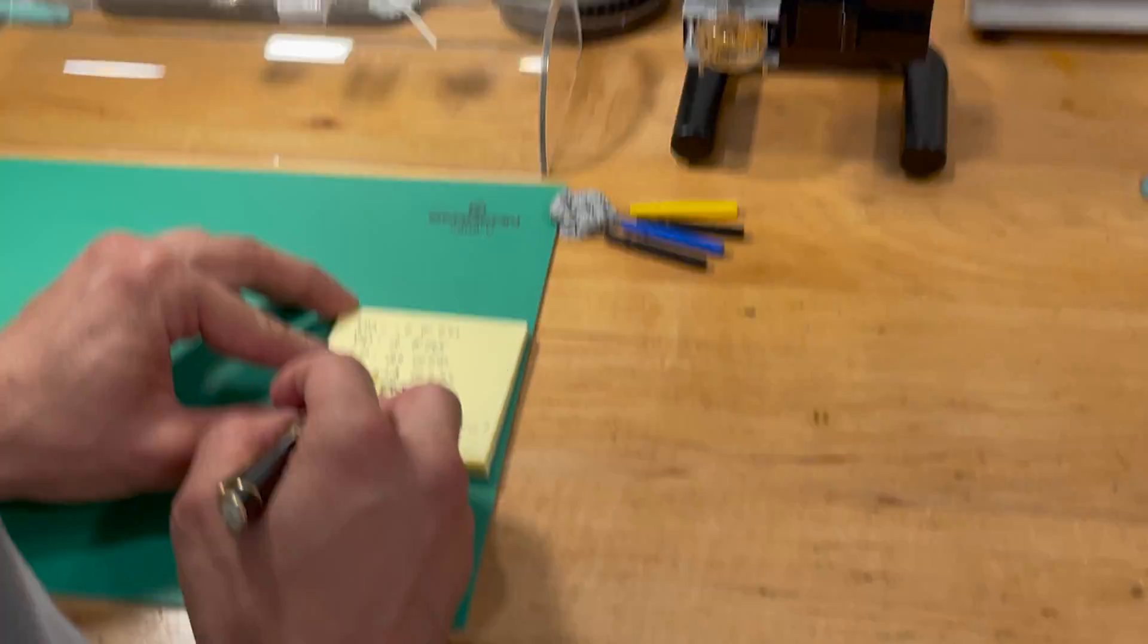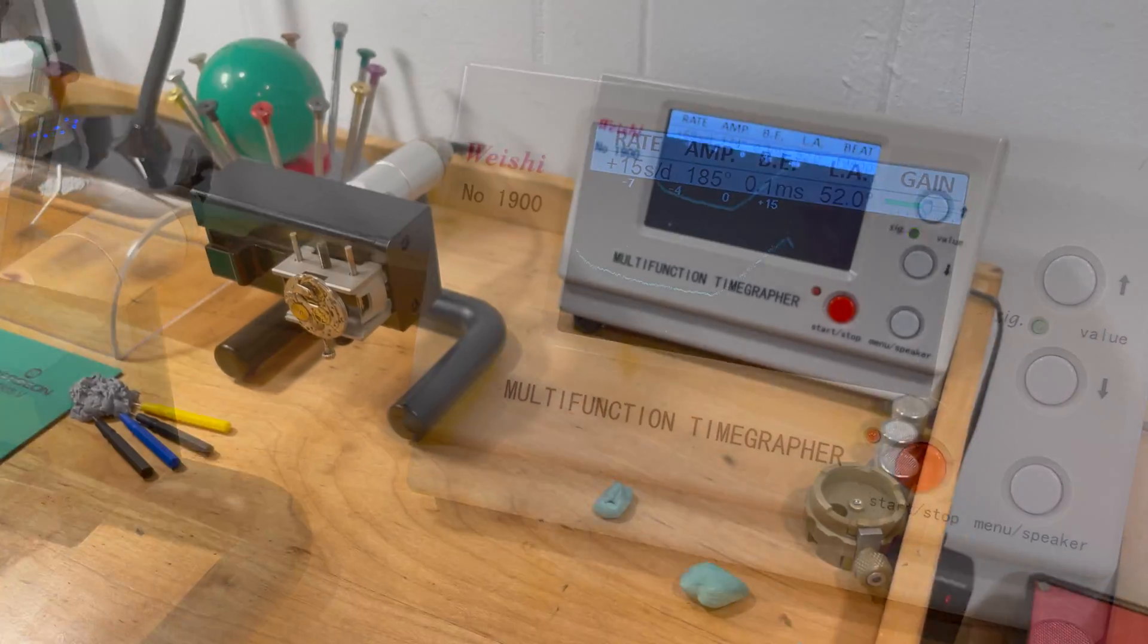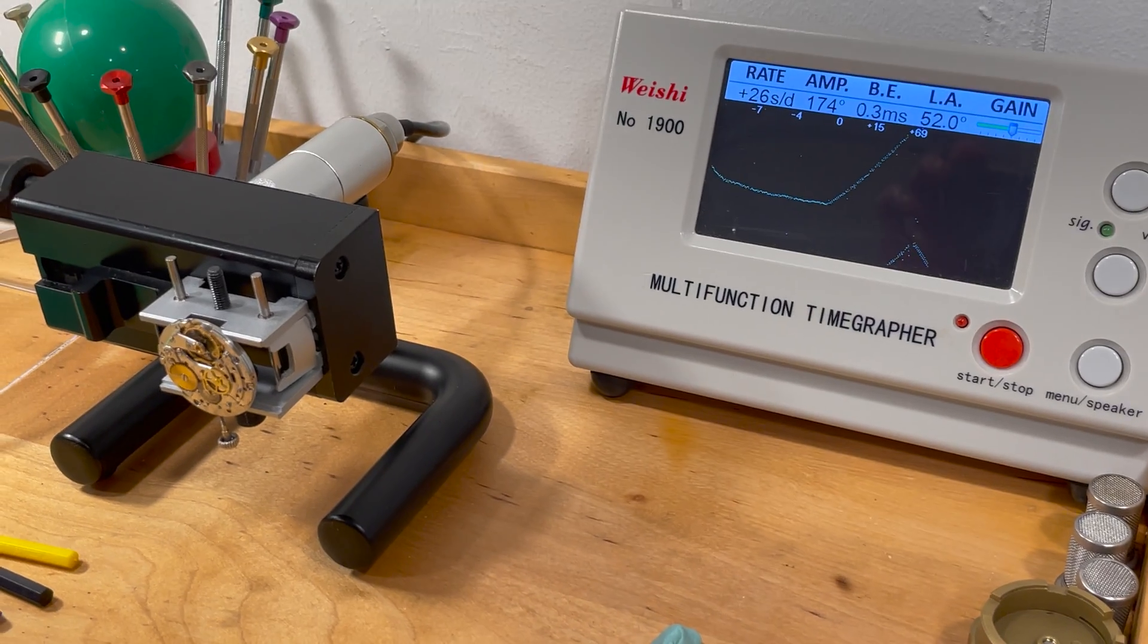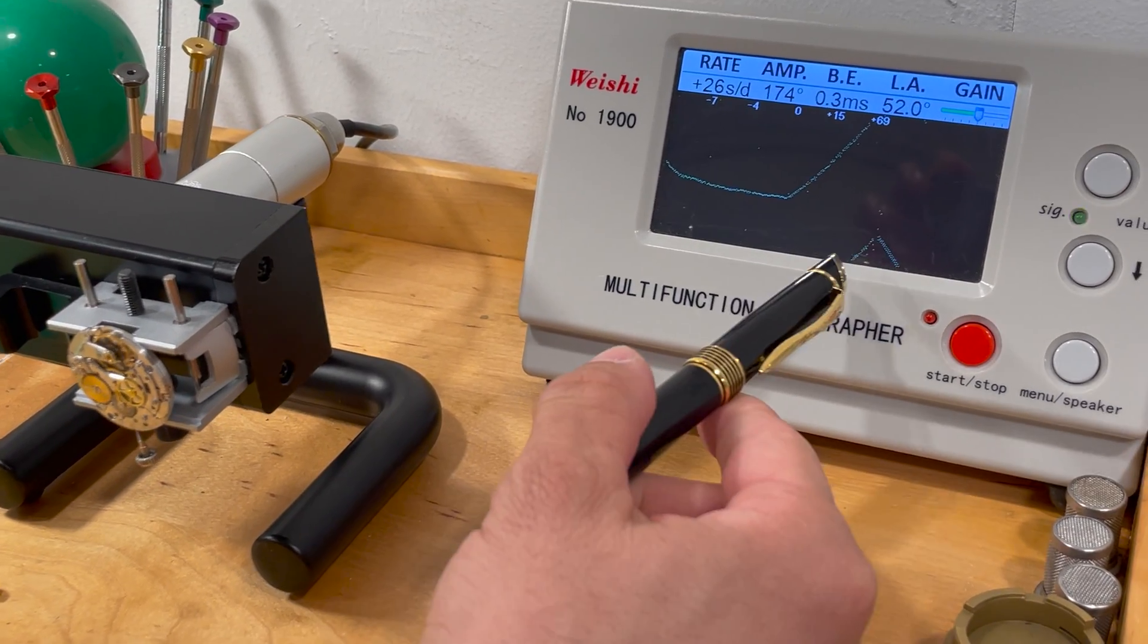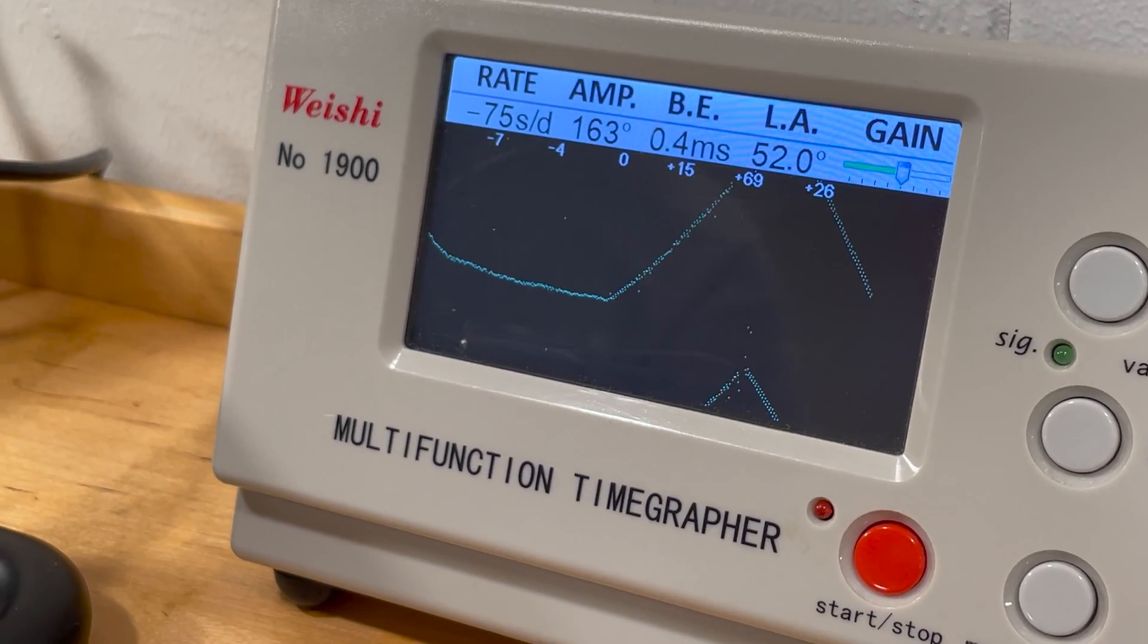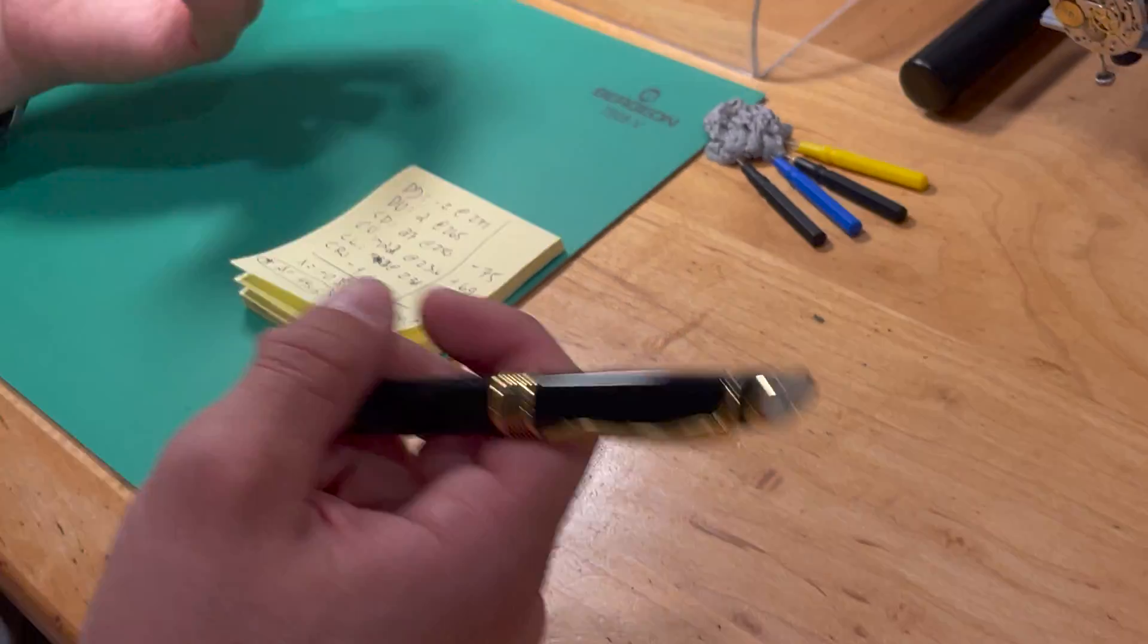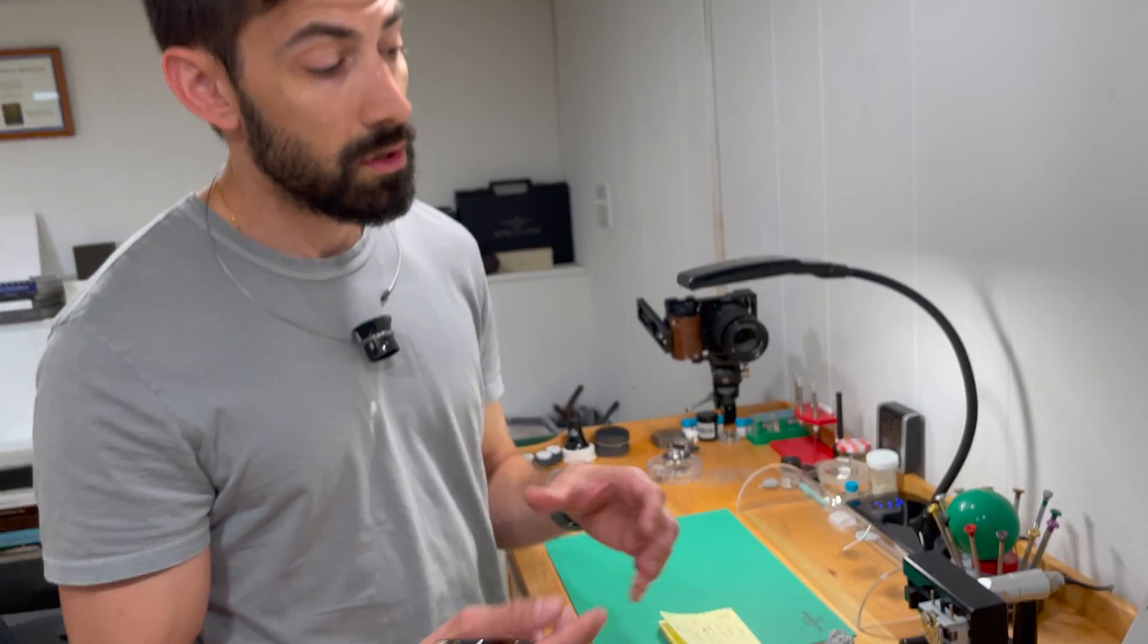And what we should see if this is a poise issue is we should see a flip-flop in the rate. Crown up was minus 22 and it's flip-flopped. Now it's looking very high. With crown down, we were at plus 27 and you notice a flip-flop there as well. Now what I'm going to do is we're going to take this balance wheel off and observe the hairspring and we're going to observe how it looks on the actual poising tool.